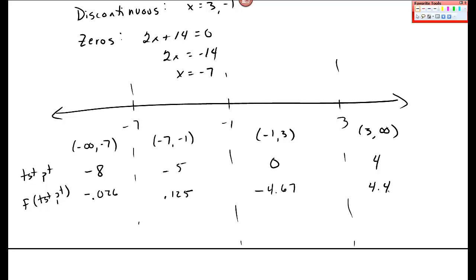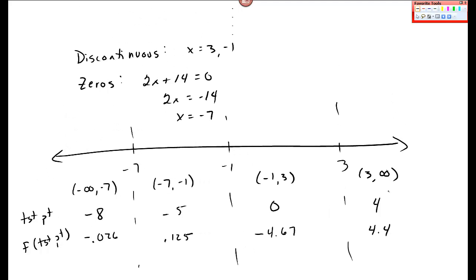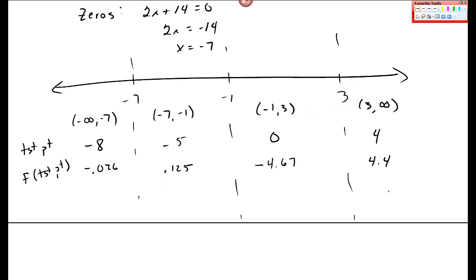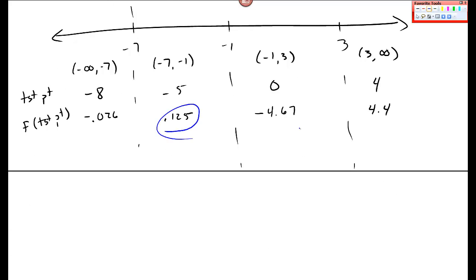Okay? And the original problem asked where this thing was positive, so that is here, and here I have positive values, so minus 7 and negative 1, and 3 to infinity.